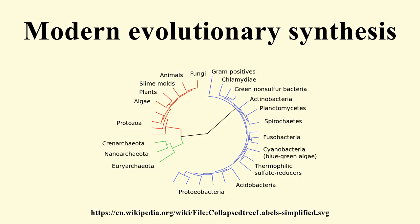The modern evolutionary synthesis continued to be developed and refined after its initial establishment in the 1930s and 1940s. The work of W. D. Hamilton, George C. Williams, John Maynard Smith and others led to the development of a gene-centered view of evolution in the 1960s. The synthesis as it exists now has extended the scope of the Darwinian idea of natural selection to include subsequent scientific discoveries and concepts unknown to Darwin, such as DNA and genetics, which allow rigorous, in many cases mathematical, analyses of phenomena such as kin selection, altruism, and speciation.